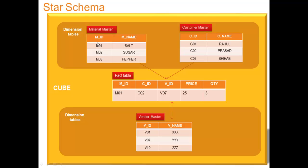The dimension table will always have the master data — information like material master, customer master, vendor master, or any kind of master data. When you come to the fact table, it contains the transaction data about this particular entity. This is how it happens in a star schema.